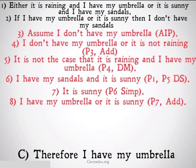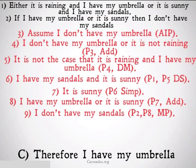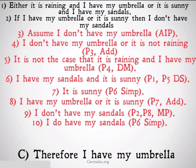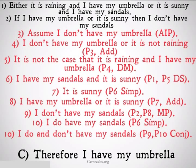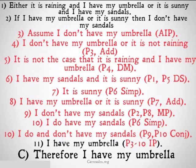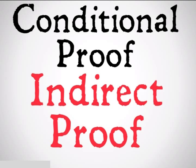Line eight: I have my umbrella or it is sunny, from premise and addition. I don't have my sandals from lines two and eight by modus ponens. The problem is we can also conclude I do have my sandals from line six by simplification. Therefore, I both do and don't have my sandals — a contradiction. Therefore, the assumption I made must be incorrect, so I do have my umbrella, from lines three through ten by indirect proof.